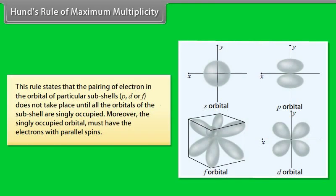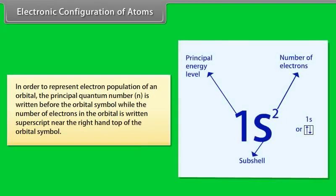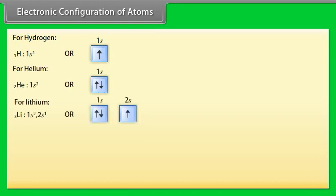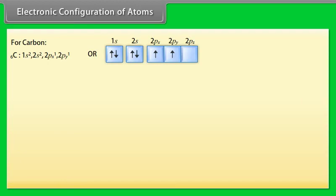Hund's Rule of Maximum Multiplicity states that the pairing of electrons in the orbitals of a particular subshell (P, D, or F) does not take place until all the orbitals of the subshell are singly occupied. Moreover, the singly occupied orbitals must have electrons with parallel spins. To represent the electron population of an orbital, the principal quantum number N is written before the orbital symbol, while the number of electrons is written as a superscript. For example, two electrons in the S orbital of the first energy level is written as 1s². Electronic configurations are given for hydrogen, helium, lithium, beryllium, boron, carbon, nitrogen, and oxygen.